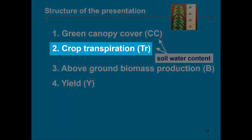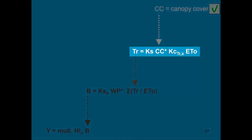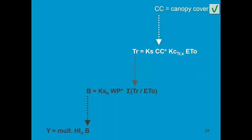Let's now move to the assessment of crop transpiration. Here we see how AquaCrop calculates crop transpiration. The crop coefficient is proportional to the canopy cover, and since we have checked the canopy cover, we can be quite sure that the crop coefficient is also correct. The first thing to check is ET₀, which is the reference evapotranspiration.